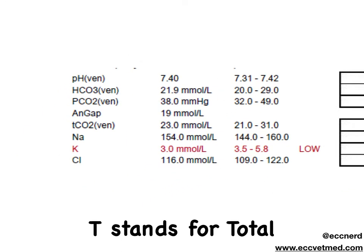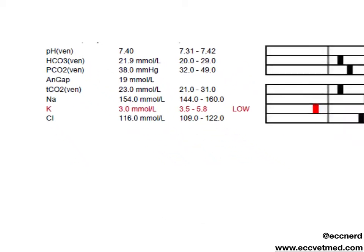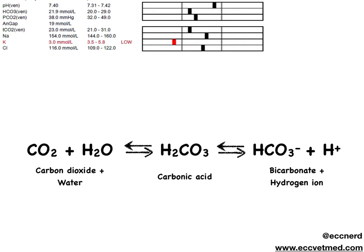The blood gas report and some chemistry panels will often report a value called the TCO2 in addition to the PCO2 and the bicarbonate. T stands for total, and this can be very confusing when you first start evaluating blood gases. What we're really concerned with when we interpret a blood gas are the PCO2 and the bicarbonate. Let's look at the difference between those two values.